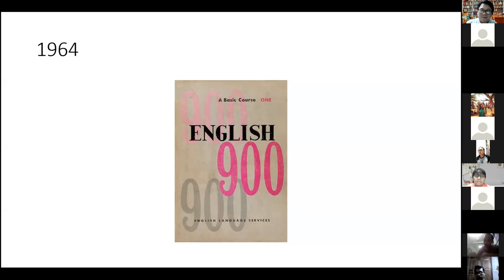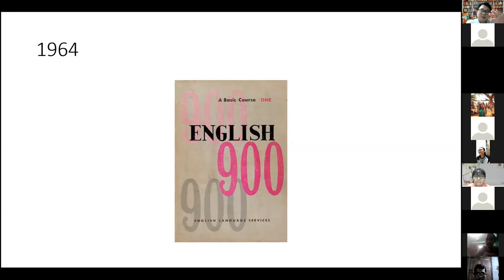You might have come across the book 'English 900' — an example of a course book from the Audio-Lingual Method, based on behaviorist theory, published in 1964. It's that outdated, yet still in Myanmar you can see this book in bookstores. They are still popular here — based on behaviorist perspective.